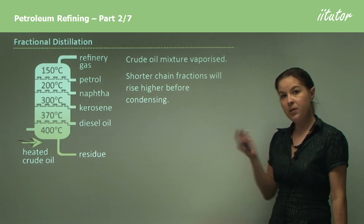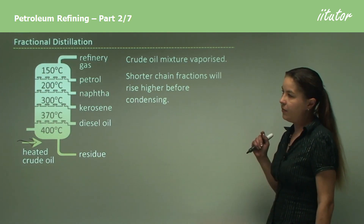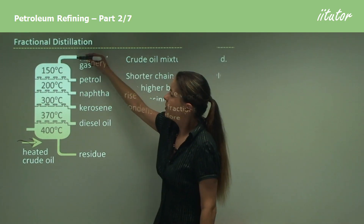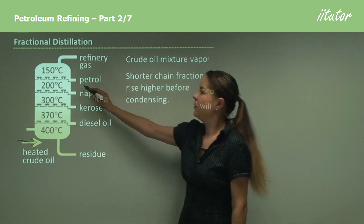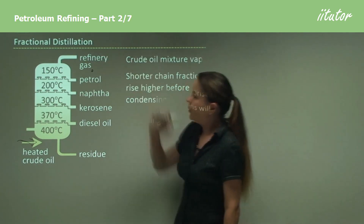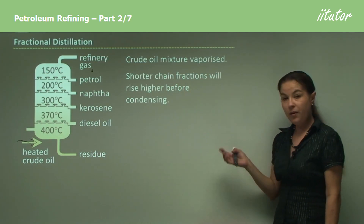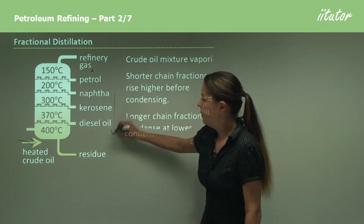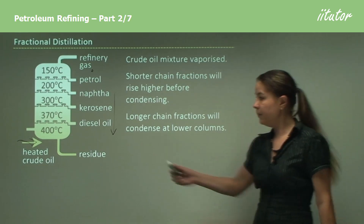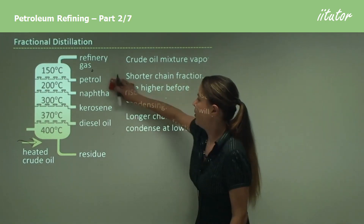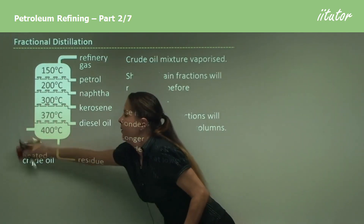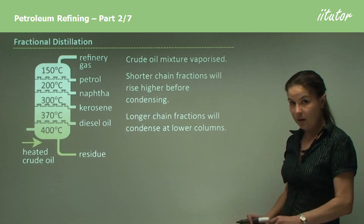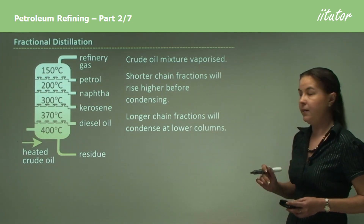Shorter chain fractions, as we just touched on, have a lower boiling point. Shorter chain fractions will then rise, so fractions up here like refinery gas and petrol with lower boiling points will rise. On the flip side, the longer chains will condense lower down on the column with a higher boiling point. So keep in mind: the shorter the chain, the higher up the column, and the lower the boiling point, and the opposite for longer chains.